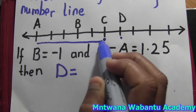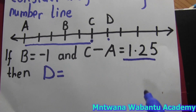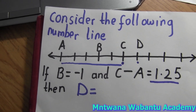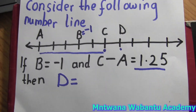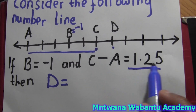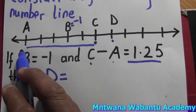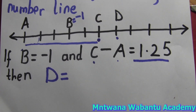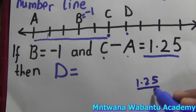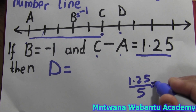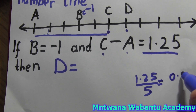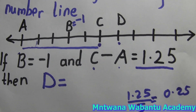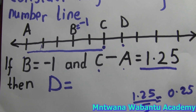All this distance from a to c is 1.25. That means c is bigger. Also, b equals negative one. So c minus a equals 1.25 — counting the steps between them: one, two, three, four, five. So I can take 1.25 divided by five steps to find how big each step is. 1.25 divided by 5 equals 0.25.